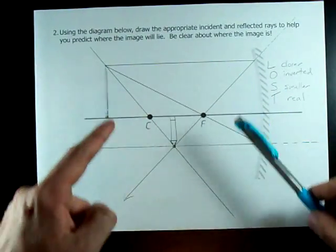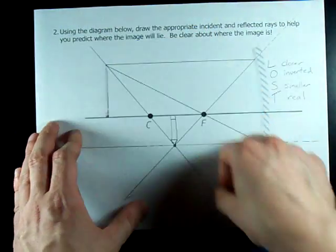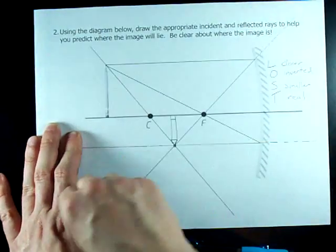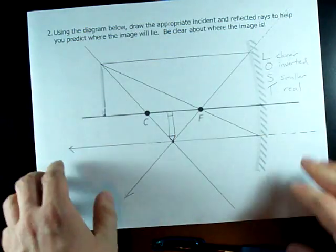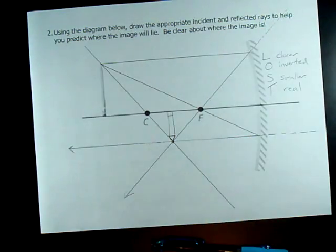Man, these get easier every time we do it. So, let's go through C, straight across through F, through F straight across. Three rays, be able to do it. Be able to do it well. Best of luck.